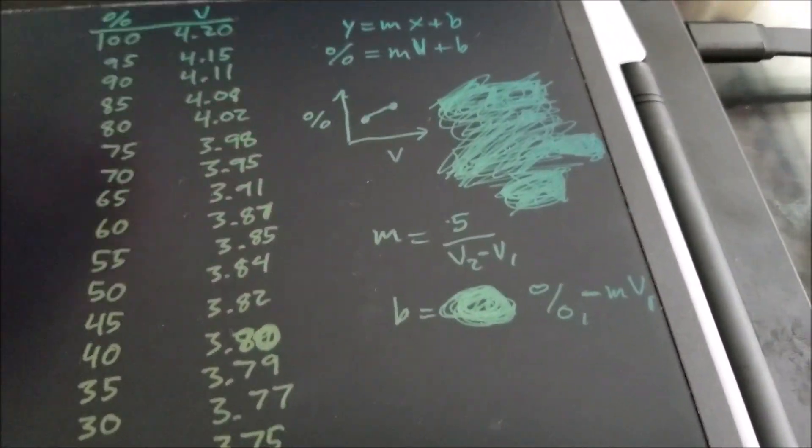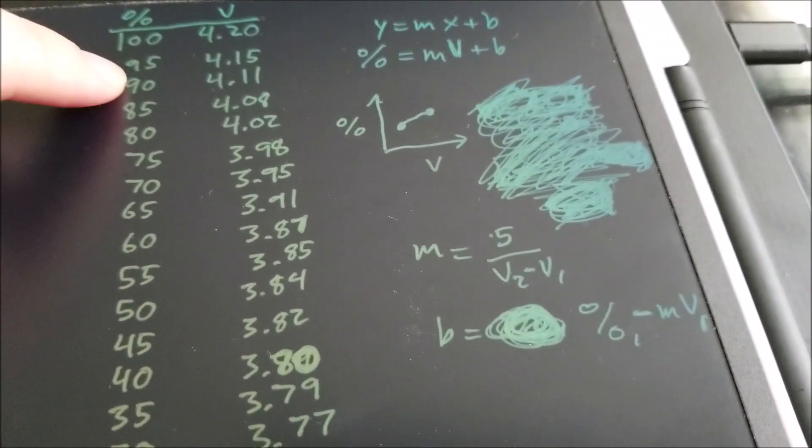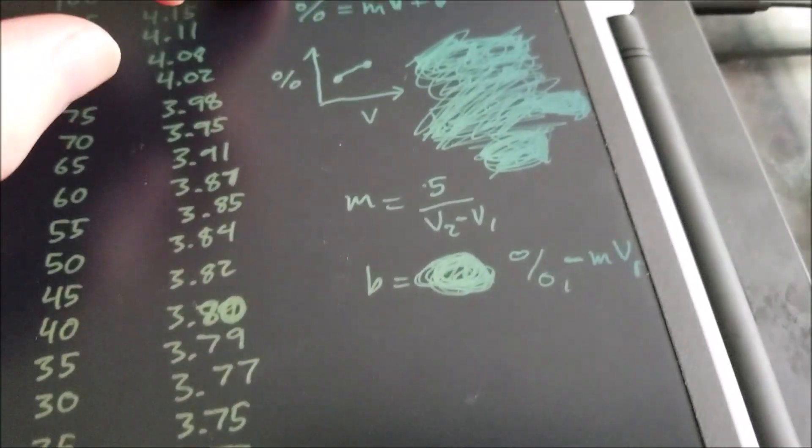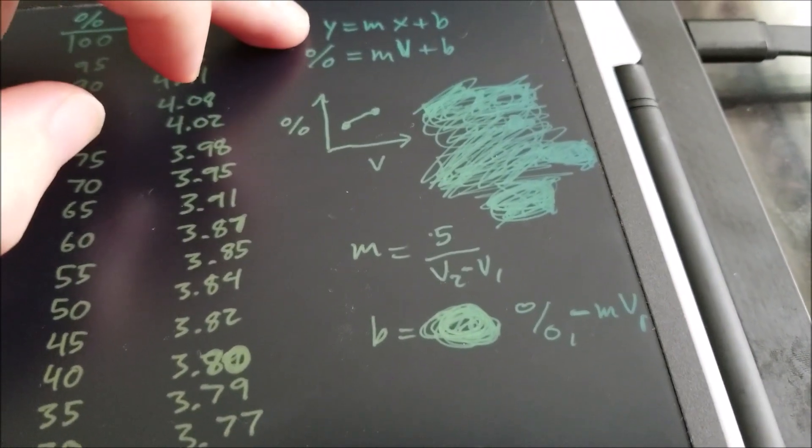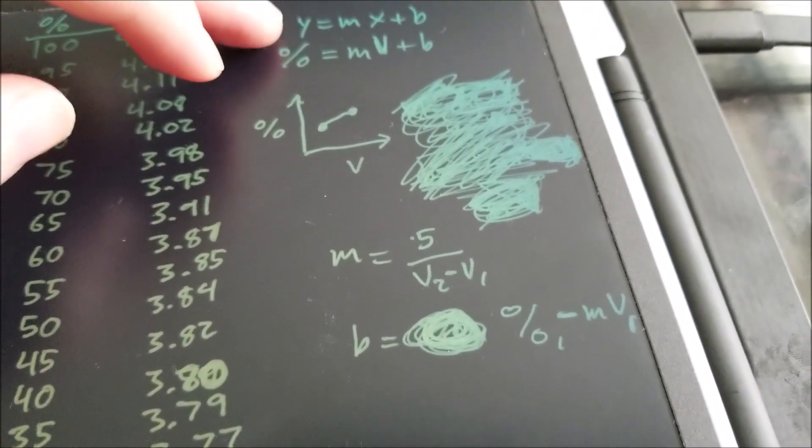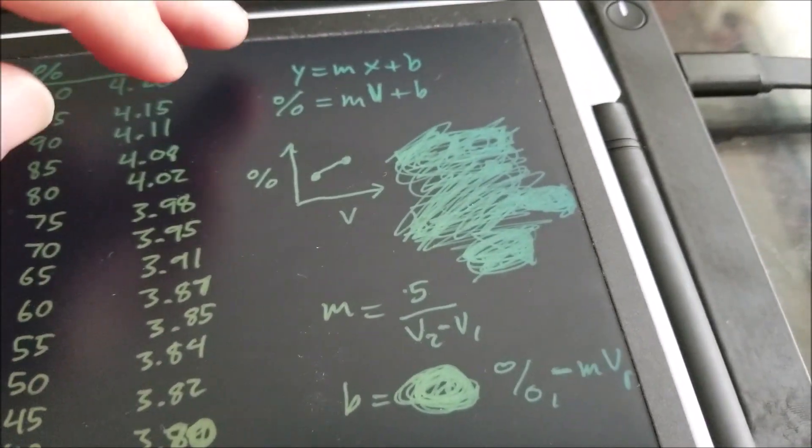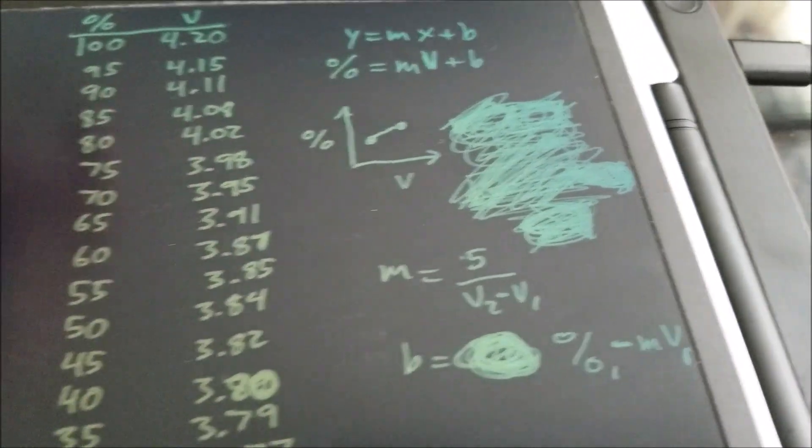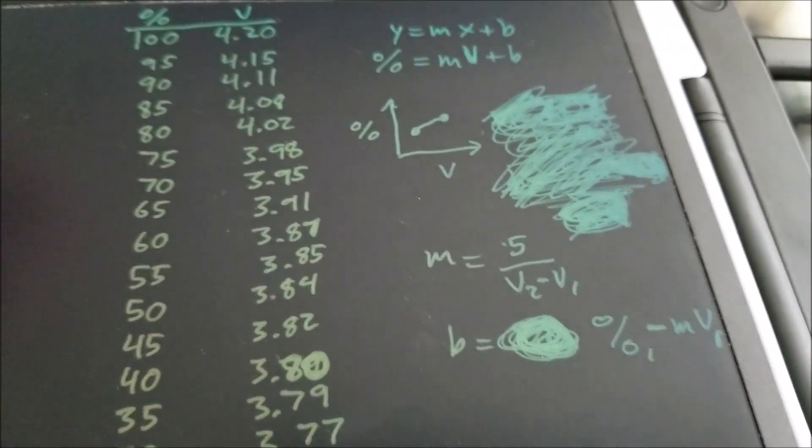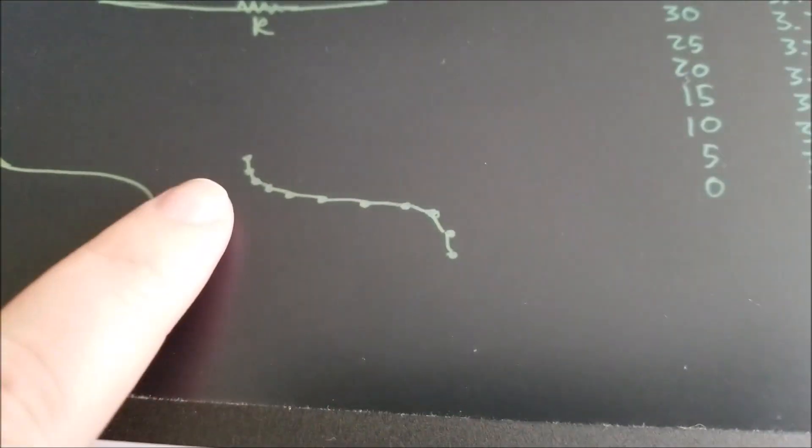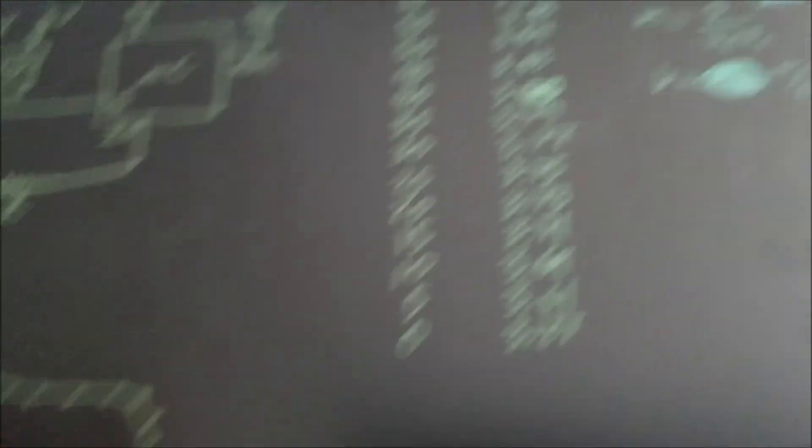And so each of these ranges in between say 95 and 100 percent or zero and 5%, we had to actually solve for the line. And so the equation everyone learns in algebra in middle school, I think, or something, is Y equals MX plus B. So we're actually solving for both M and B for all of these sub ranges so that we can find each of the line segments, the approximations.